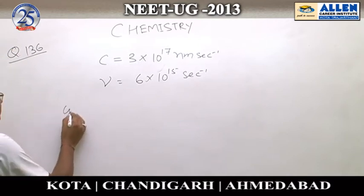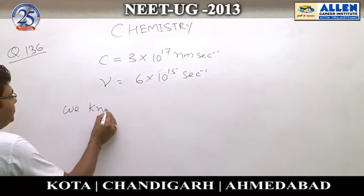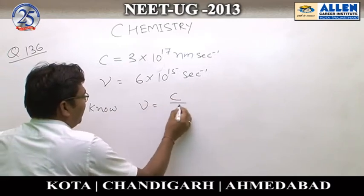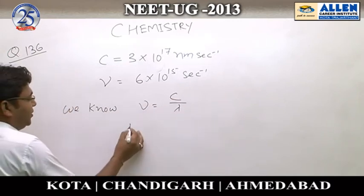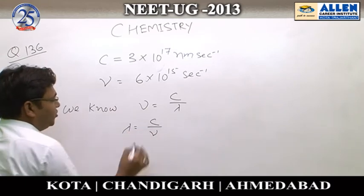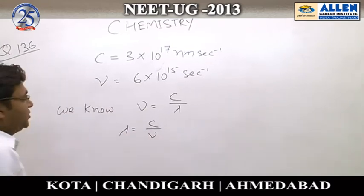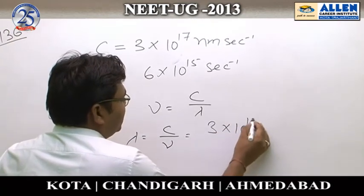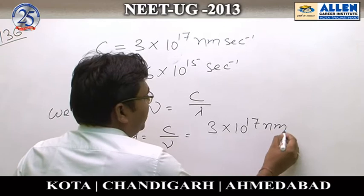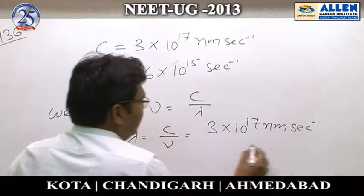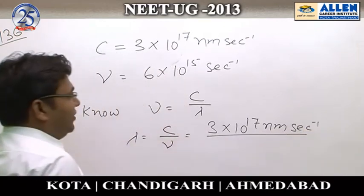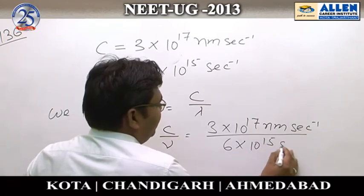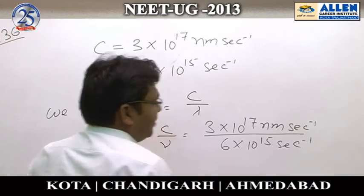We know frequency equals c divided by lambda, so lambda equals c divided by nu. Here c is 3×10¹⁷ nanometers per second and the given frequency is 6×10¹⁵ per second.